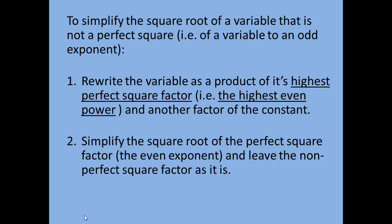We're actually going to break it down and simplify, kind of like we did for constants that were non-perfect squares. To simplify the square root of a variable that is not a perfect square — meaning a variable that has an odd power — we want to rewrite the variable as a product of its highest perfect square factor, meaning write it as the highest even power closest to that number without going over, and another factor. You're going to write this as the highest even power closest to the power you have, and then the other factor will just be the variable to the first power. Once you do that, simplify the first square root that has a perfect square in it, and leave the non-perfect square factor as it is.